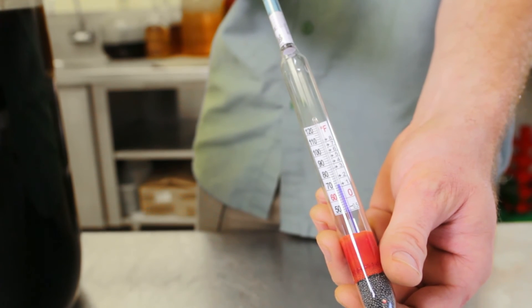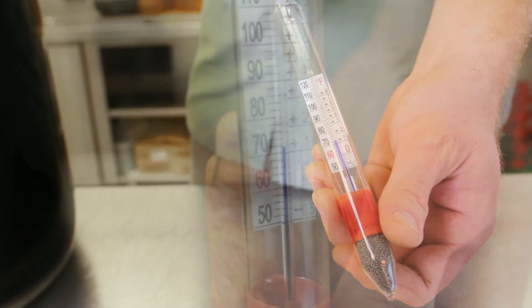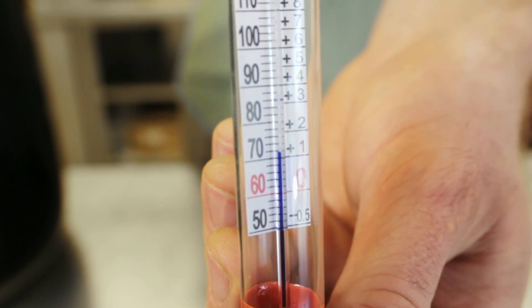Also, Great Fermentation sells a thermohydrometer, which has a thermometer that gives the number of gravity points to add or subtract to get an accurate reading.